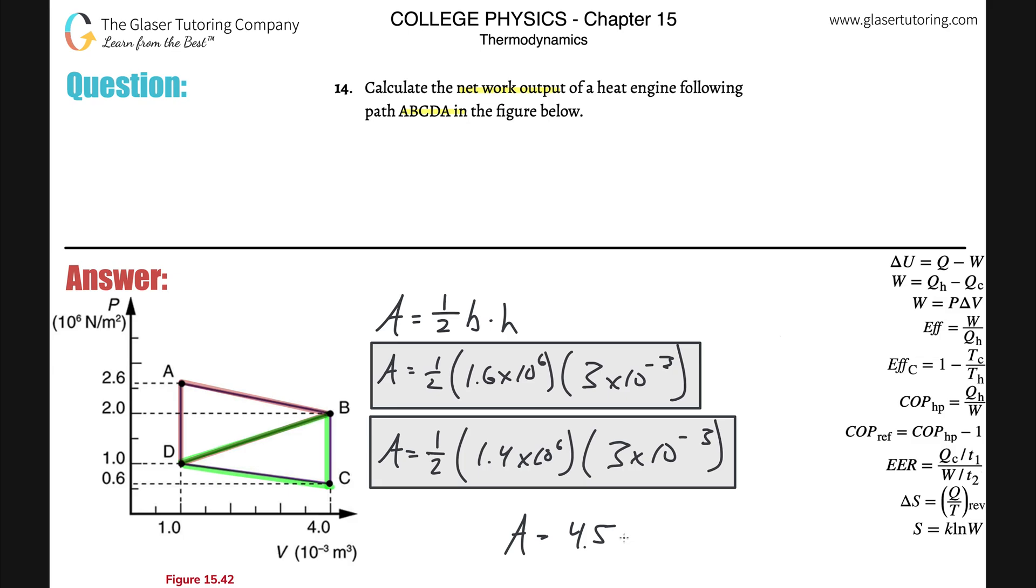How many sig figs? Two, that should be fine. 4.5 times 10 to the third. And since it's work, we're talking about joules. We used all the standard units. Thanks for tuning in, guys. Hopefully that helped. I'll see you in the next problem. Take care.